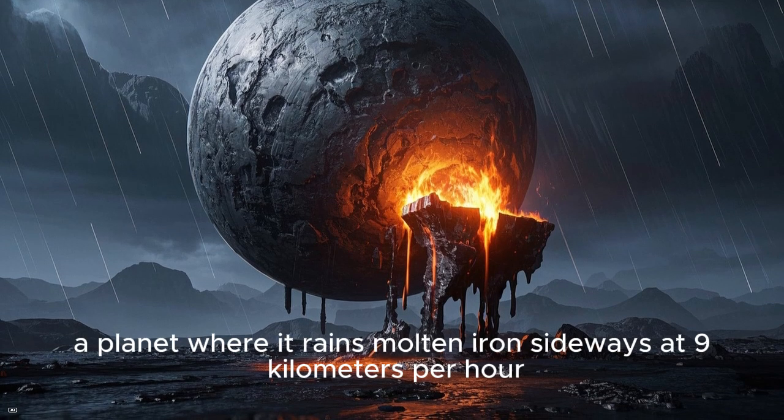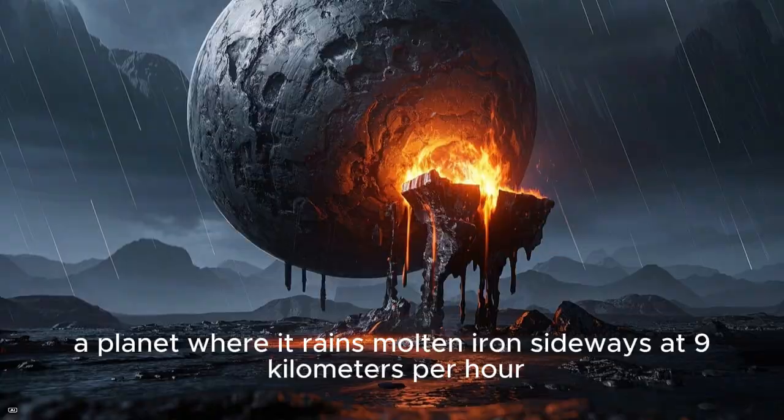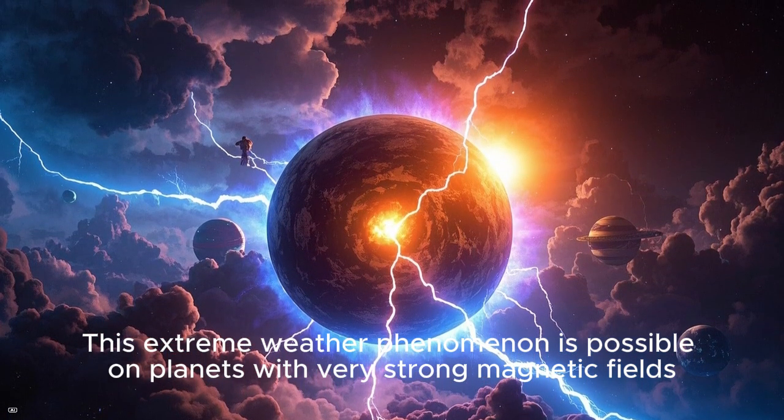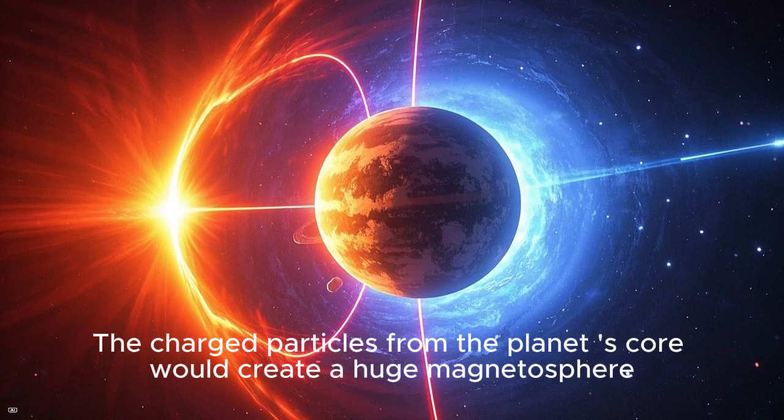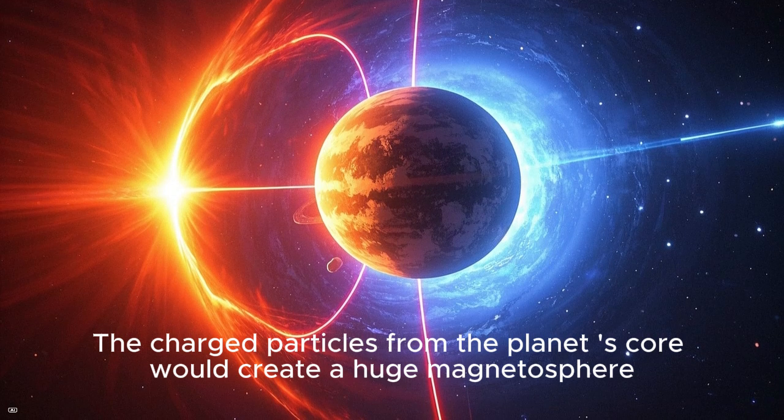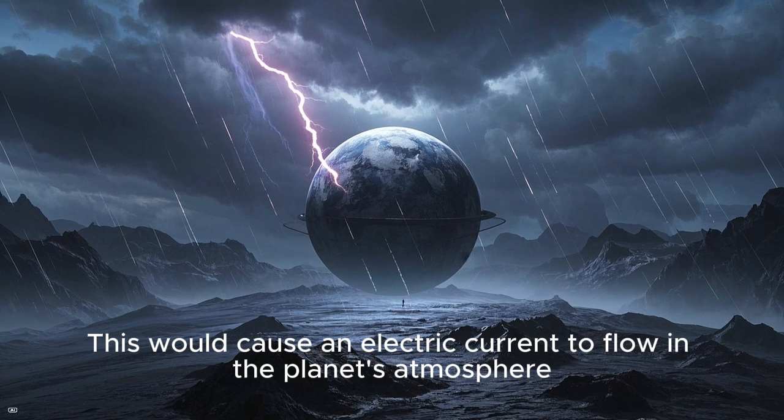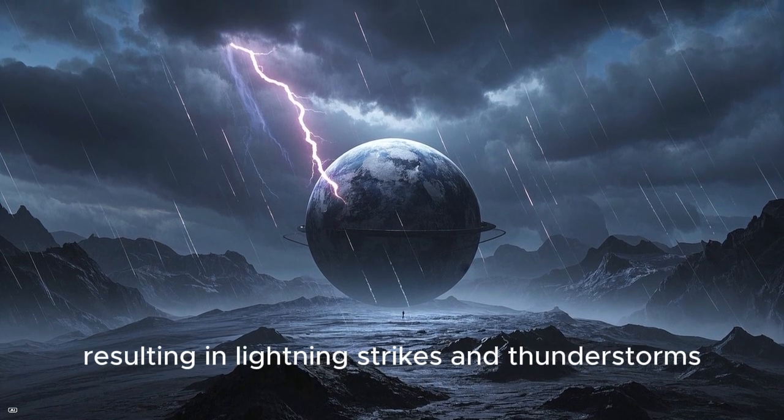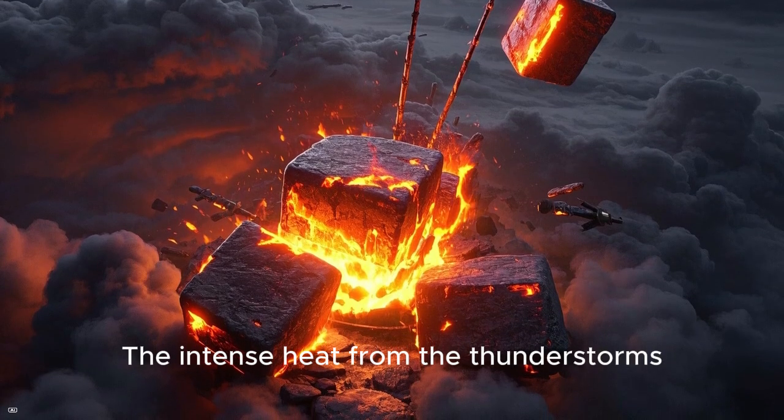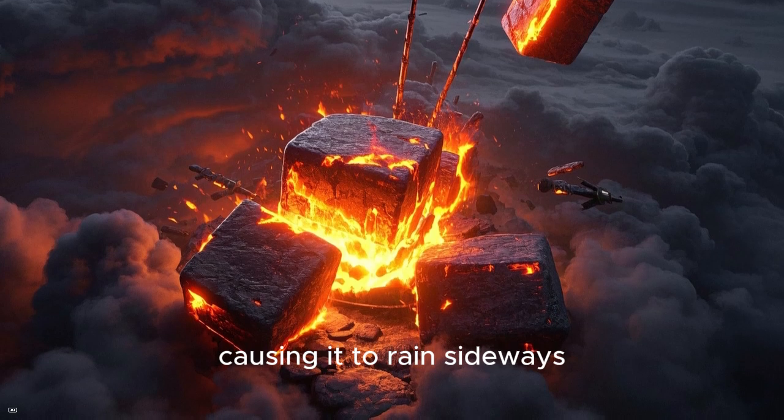Molten iron rain: Picture a planet where it rains molten iron sideways at 9 kilometers per hour. This extreme weather phenomenon is possible on planets with very strong magnetic fields. The charged particles from the planet's core would create a huge magnetosphere that traps charged particles from the sun. This would cause an electric current to flow in the planet's atmosphere, resulting in lightning strikes and thunderstorms. The intense heat from the thunderstorms would melt the iron in the planet's mantle, causing it to rain sideways.